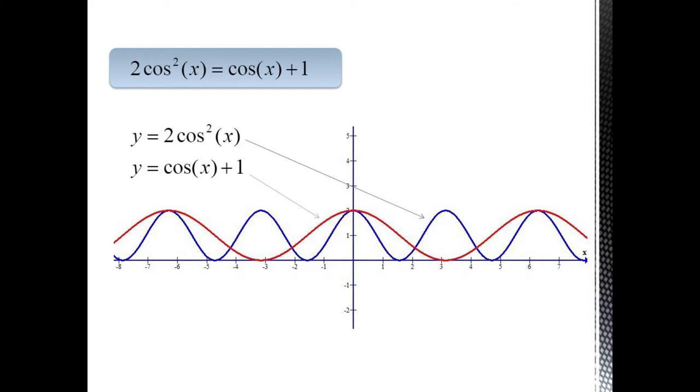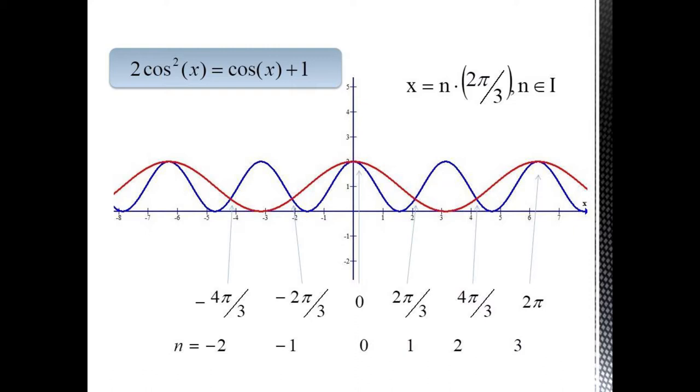We may also think of this problem graphically. If the right and left-hand sides are considered as separate graphs, then we're asking when will the graph of y equals 2 cosine squared x and the graph of y equals cosine x plus 1 intersect. We can see that our analytic solution matches up with the graph.